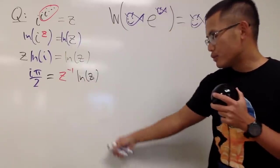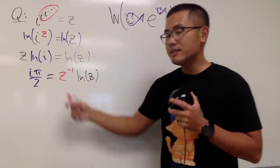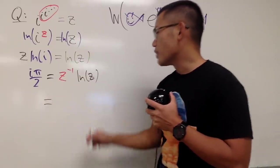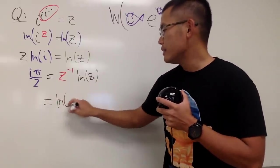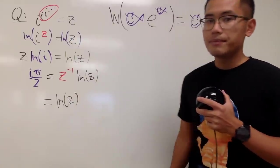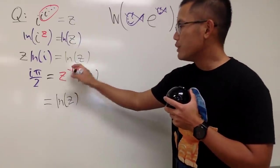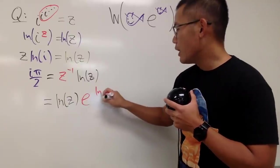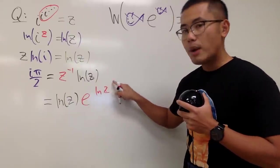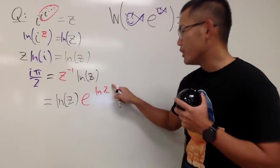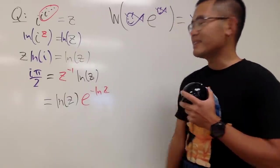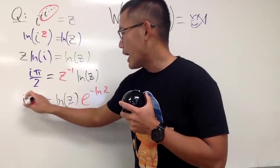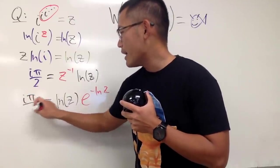To make this happen, we look at the expression and introduce e in the following way. I will keep ln z as is, but for z to the negative one, we can write it as e to the power of ln z to the negative one. We can bring the negative to the front. On the left-hand side it's still equal to iπ/2.